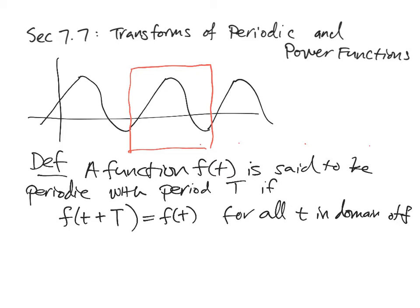So in our example, if the period goes from some a to b, then the period T would equal b minus a. And for any little t, if you look at the same spot hopped over by big T — so you get t plus T — you get the same value of the function. If that's true then you have a periodic function, and that holds for any t value.